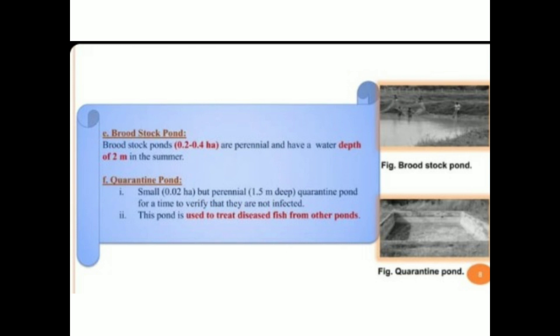Next is the broodstock pond. Broodstock ponds are usually 0.2 to 0.4 hectare in size, are perennial, and have a water depth of about two meters in summer. The last one is the quarantine pond, which is small — about 0.02 hectare — but perennial, and may be 1.5 meters deep.